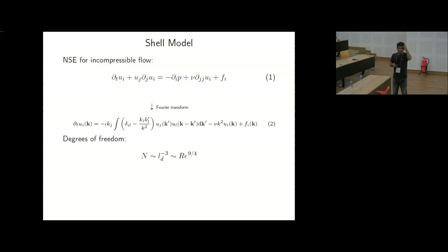If you take Reynolds number to be 1000, the degrees of freedom is around 10 to the 6 or 7. That is a huge number and if we start computing directly, a lot of computational resources is needed.